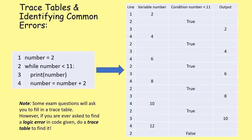After the line number, we have the variable column - the only variable in this program is 'number' - and we record how that value changes as the program runs. The next column evaluates the condition: is the number less than 11, true or false? The final column shows any output, only when you see a print statement. Don't do this too quickly - trace tables are a much bigger part of the exam than they used to be.